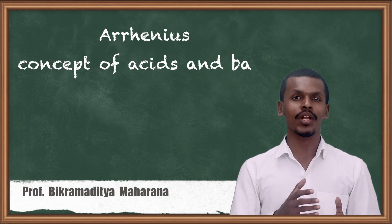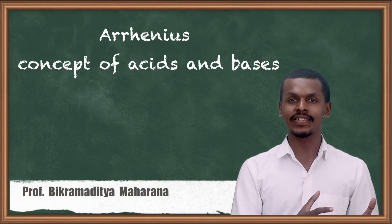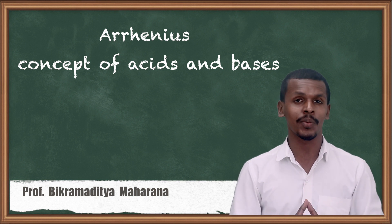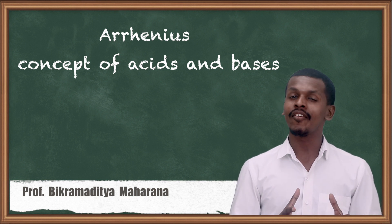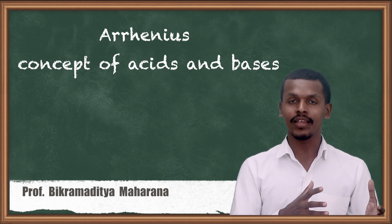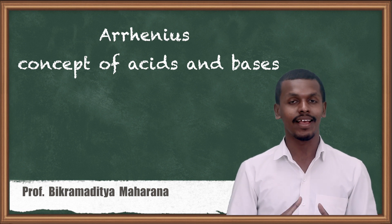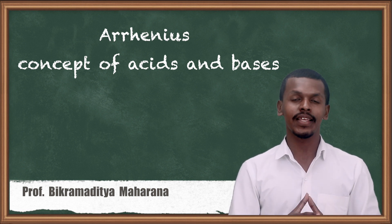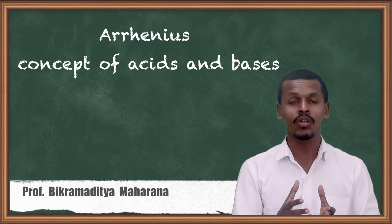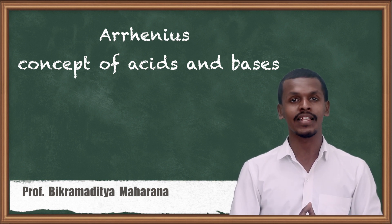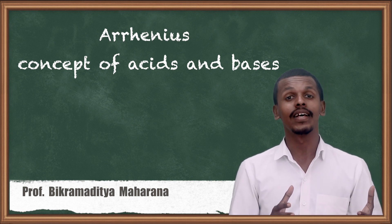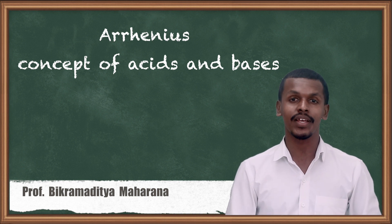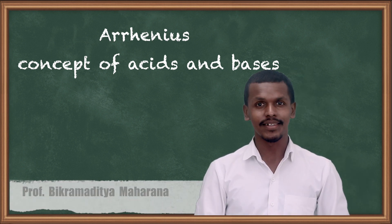Hey friends, in the previous lecture we talked about what is a strong acid and what is a strong base. When talking about acids and bases, I discussed that depending on the theories, a substance would be called an acid or a base. So the first theory we are going to talk about is the Arrhenius concept of acid and base, also called the Arrhenius theory of acid and base.